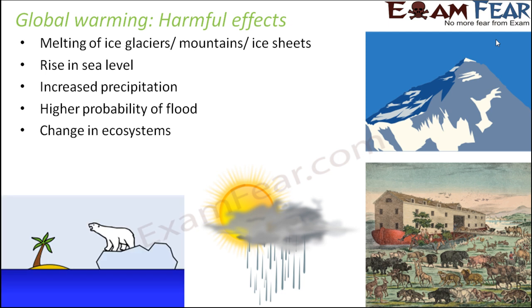There is an entire change in ecosystems. When certain regions get completely destroyed, the entire balance of the ecosystem gets spoiled.